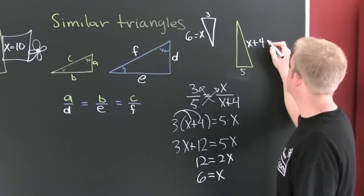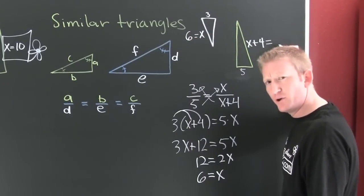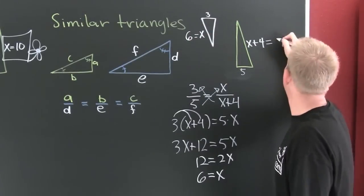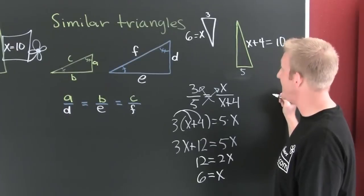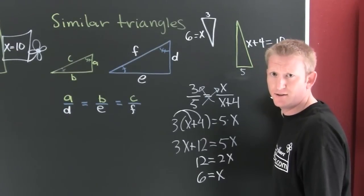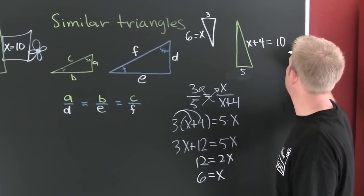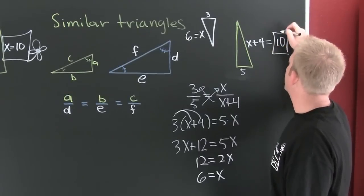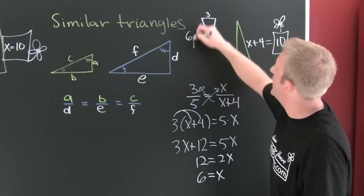is going to be six, and that says this side is going to be... what's six and four? Ten. Okay, and then you do boxing flower, boxing flower.